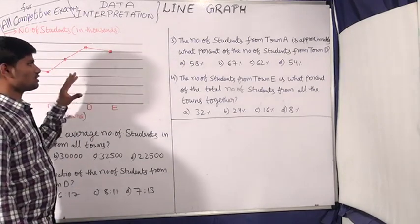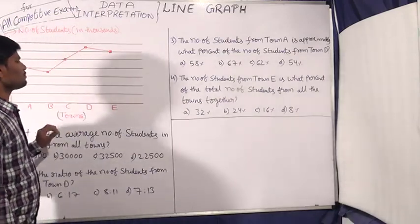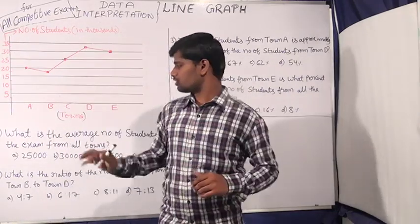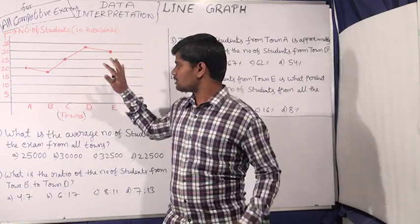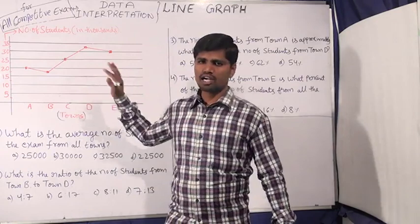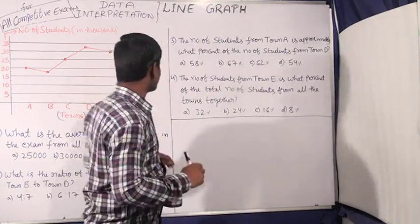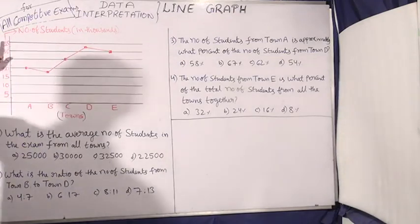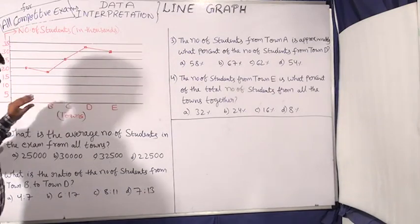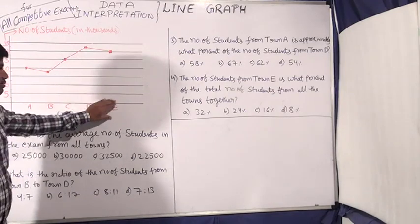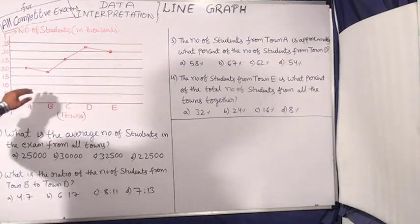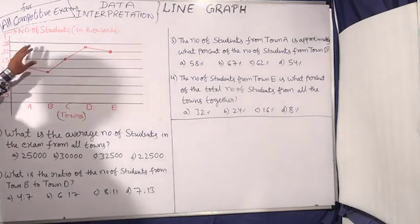This is the main graph, already used in our first exam. When we pick up the data, we want to know the first question. We will observe the data — what is the number of students? The number of students are the towns: A, B, C, D, E. These alphabets are now representative.